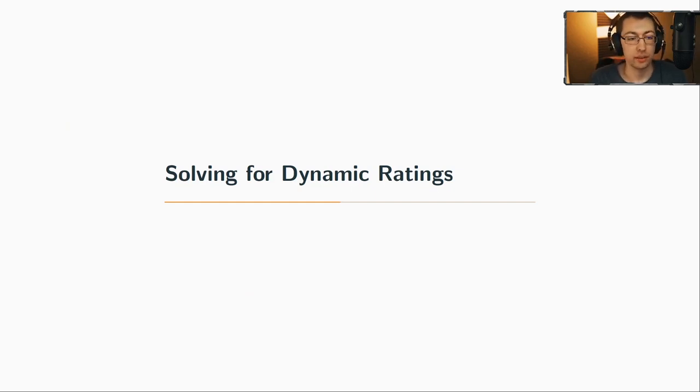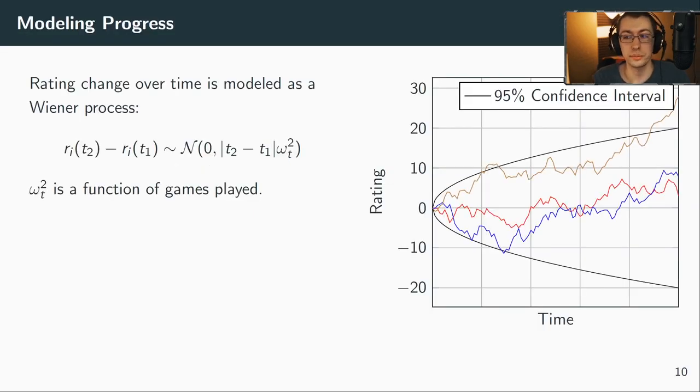So now the interesting part with whole history rating is how can we expand this constant rating, which is static for a longer time, and have it changing over time? First we need some kind of model. How do we model the rating changing over time? We do this - we model it as a Wiener process. What this means is that at each time step we add a normal distributed random variable, and over time you then get this confidence interval that grows with the square root of time. The variance grows linearly with time, as you can see in the model, and there I plotted three possible realizations of this Wiener process, how it can look.